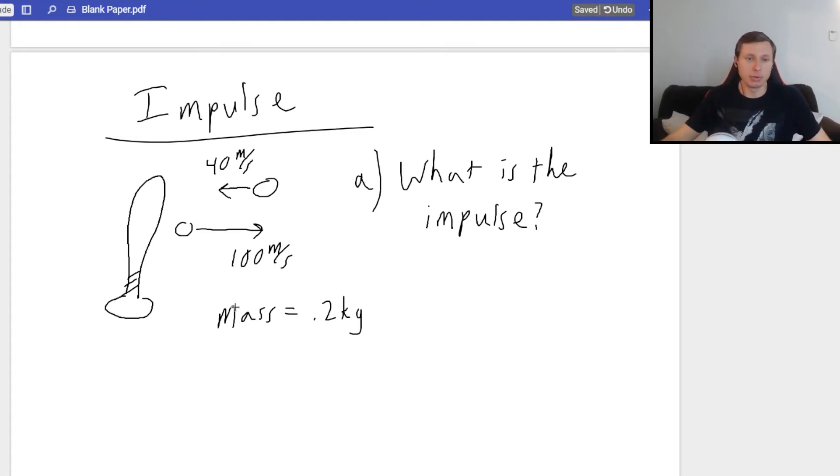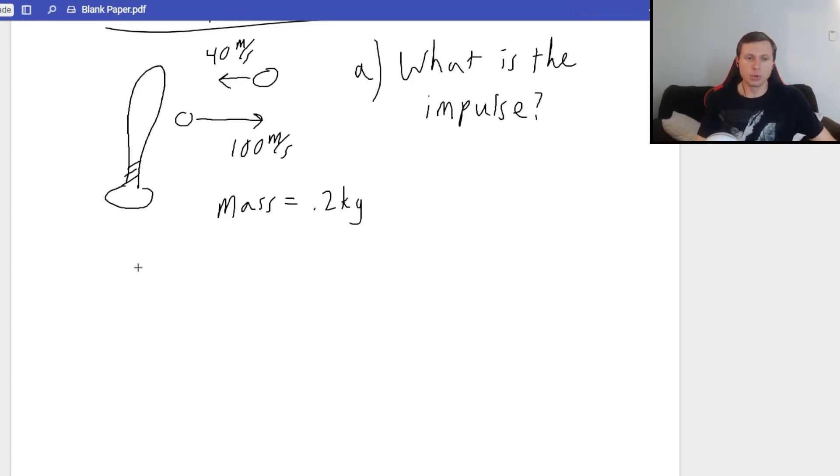So how do we solve impulse problems? Well, remember there's two equations. You have J, which again is the stupid variable we use for impulse for no reason, is equal to force times time, which is also equal to delta P. But I'm going to cross out delta P because I like writing P final minus P initial.